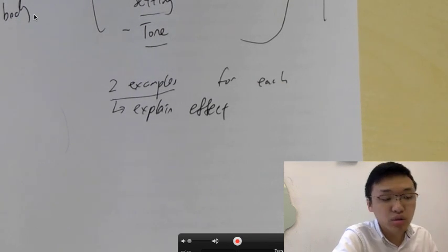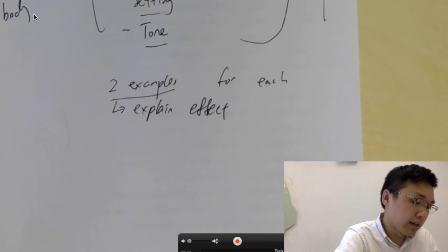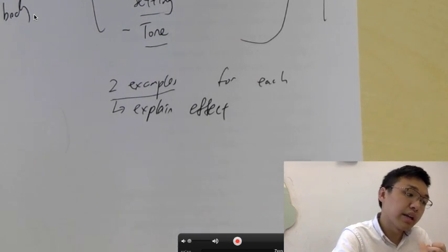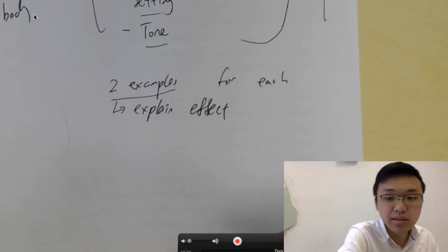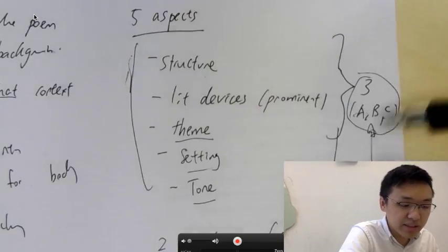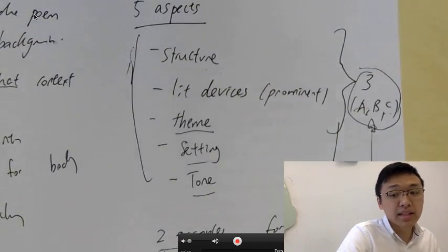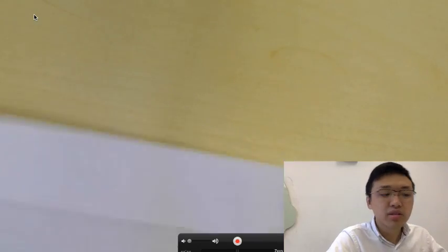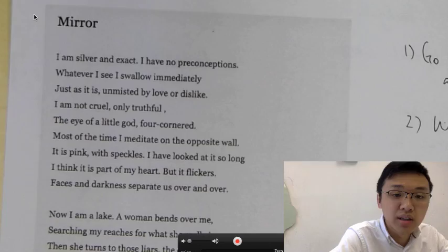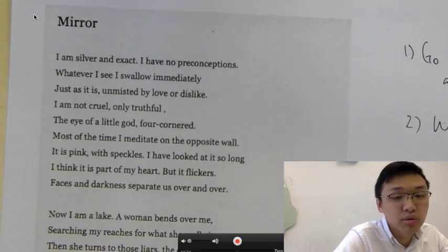And your conclusion, you just conclude by basically summarizing what the author expressed in the poem and restate how A, B, and C helps to enhance the effects of the poem. But now, let us move on to the next part, because I know even after I give you this concrete map, maybe it is a bit hard for you to understand how it actually works in real life.